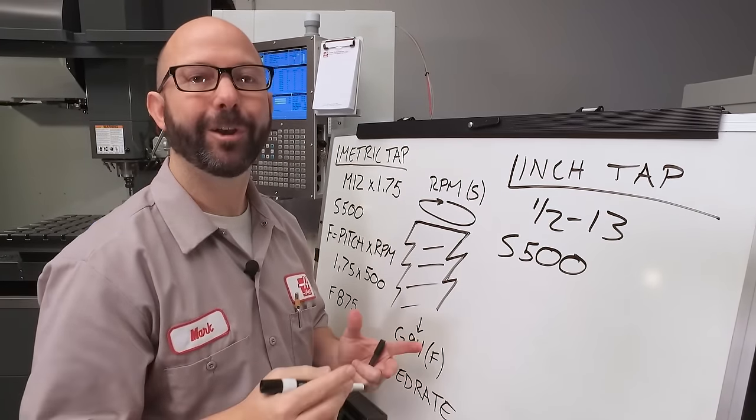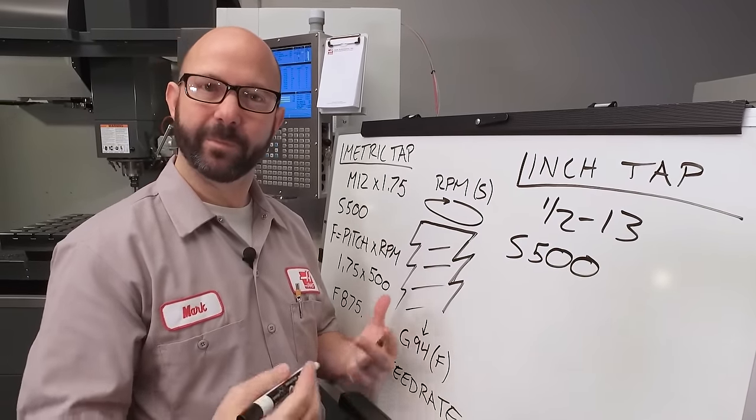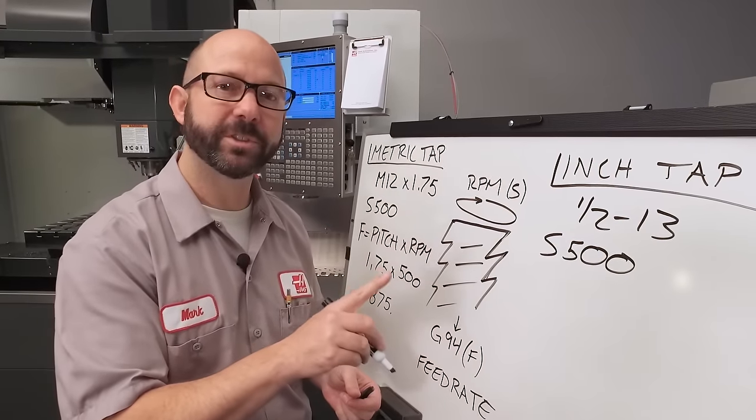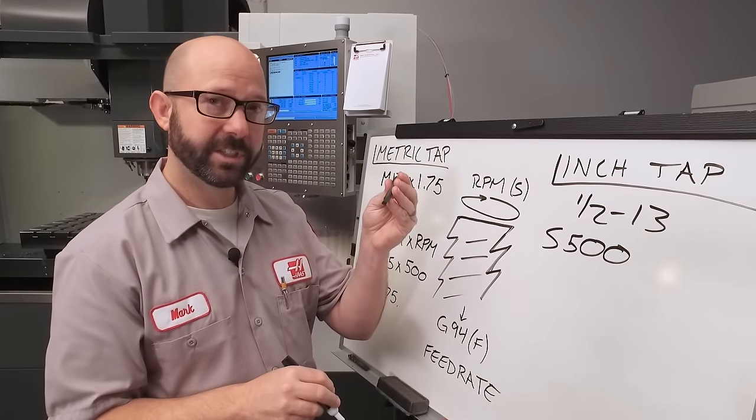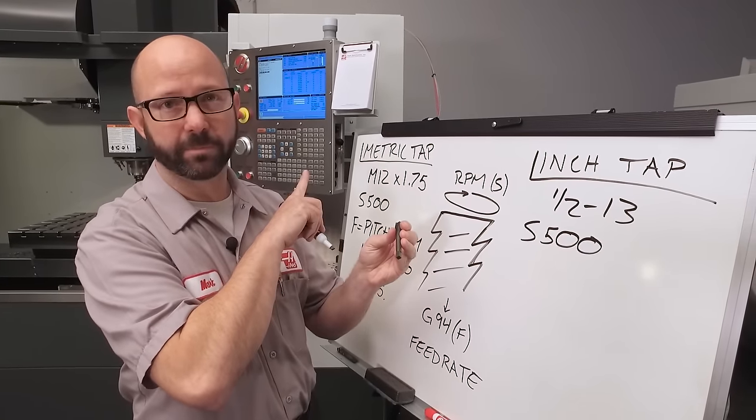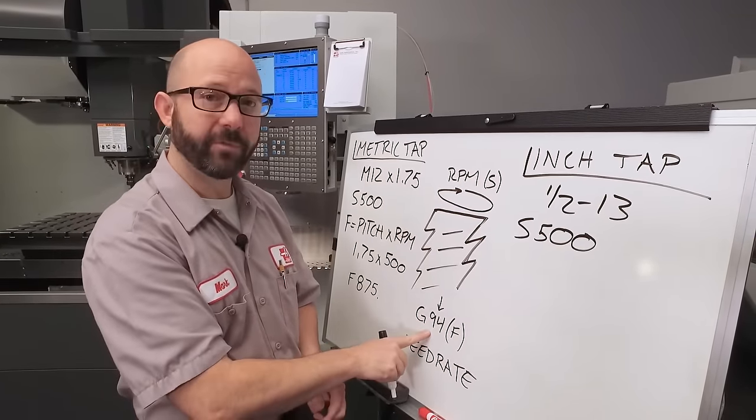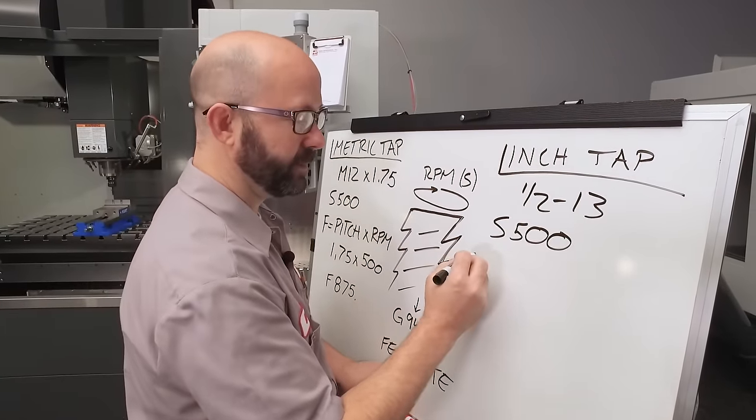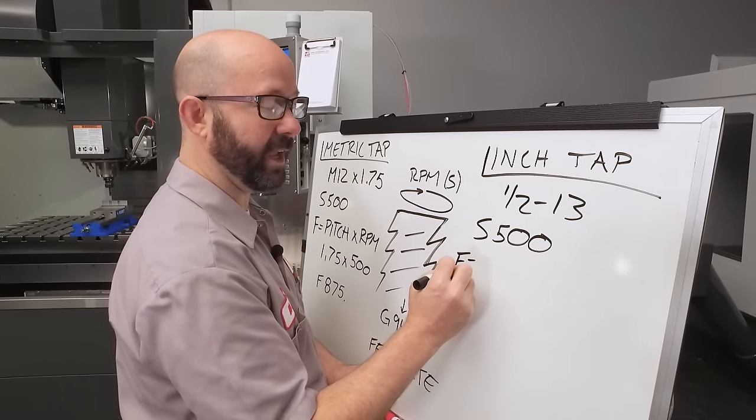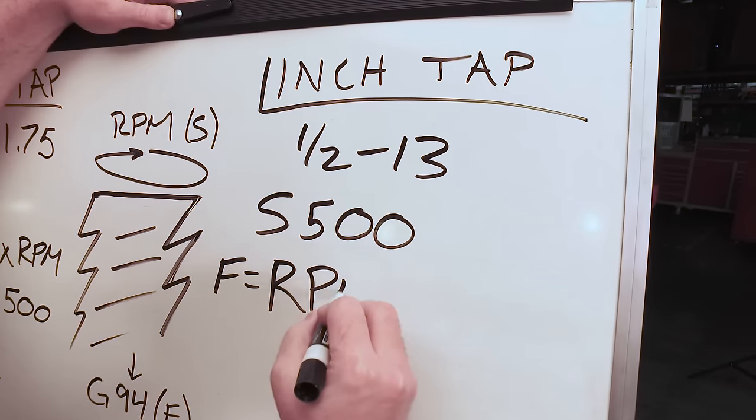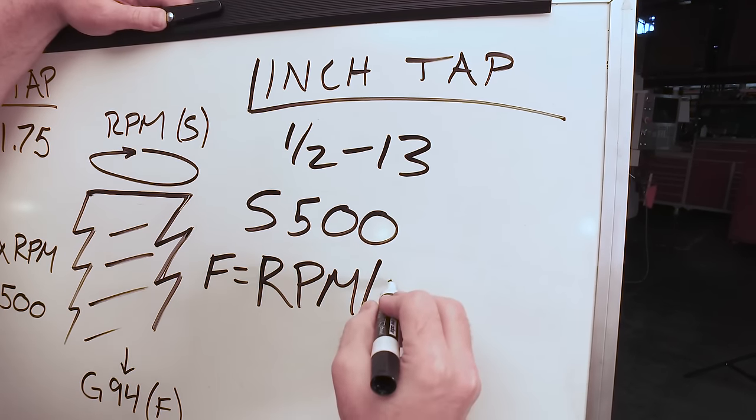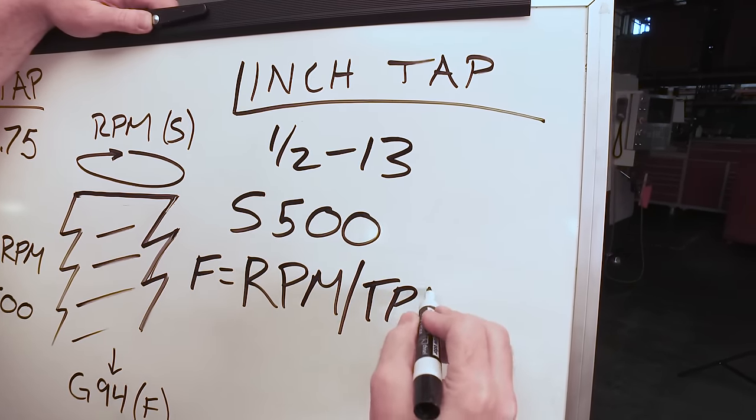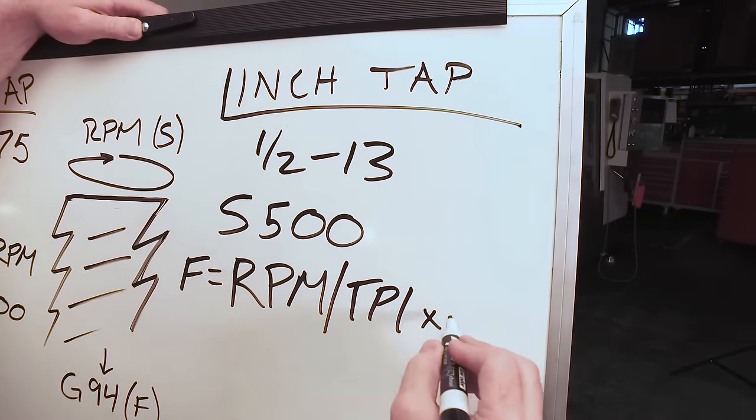Now we come to our feed rate, the hard part again. But again, we've got a formula. This formula is going to work for an inch tap while our machine is in metric mode, using a G94 millimeter per minute feed rate.